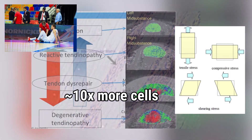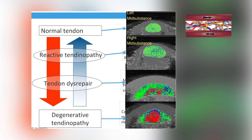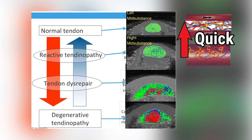If we pair this up with the tendinopathy continuum, an acute overload on a tendon would disrupt the IFM - it's very easy to disrupt, but it's also very quick to recover. That is just like a reactive tendinopathy: it's very painful, but if you just offload a little bit, it will go away. That would be the IFM getting damaged and then recovering.